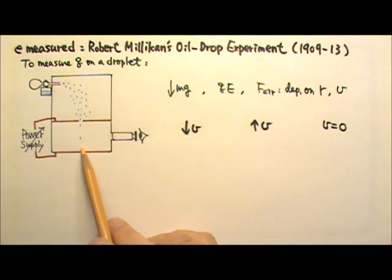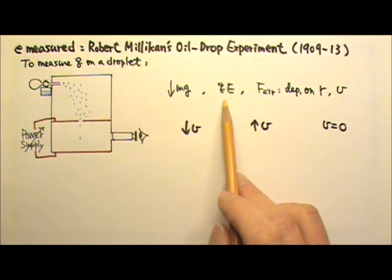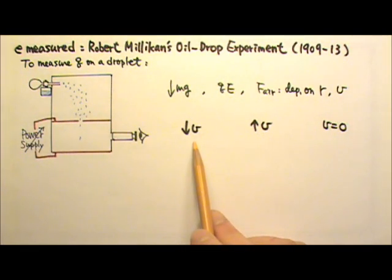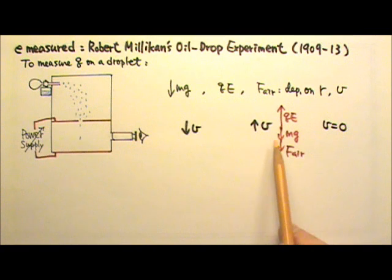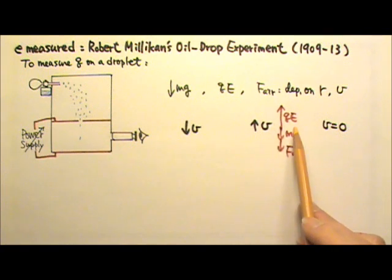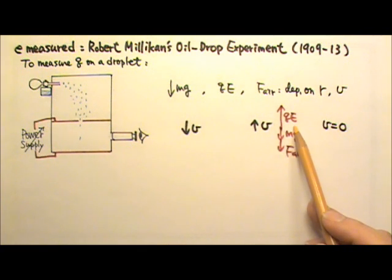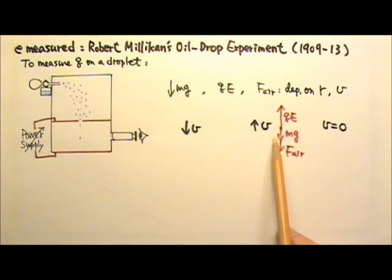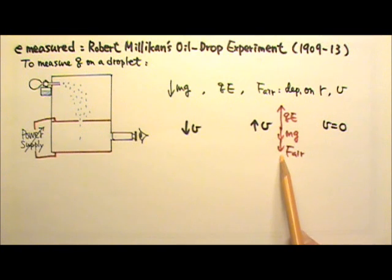Depending on the electric field in this region, the sign and the amount of the charge a droplet carries, the droplet can be falling, moving upward, or even suspended in mid-air. For example, if the electric force Qe on a droplet goes upward and it is strong enough, the droplet can be moving upward. In this case, the air resistance would be going downward, against the direction of motion.